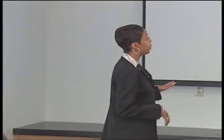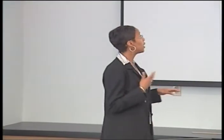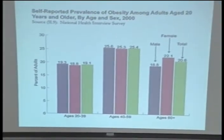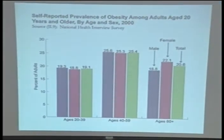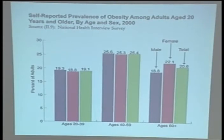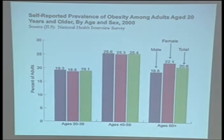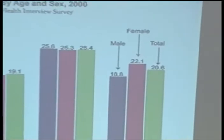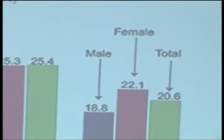Here we're looking at self-reported prevalence of obesity among adults ages 20 and older. I want you to take a minute, look at this graph, and think about what we've talked about so far: the social distribution of health, space, time, and patterns across subgroups of the population. Take one minute, look at this diagram, and jot down what you see.